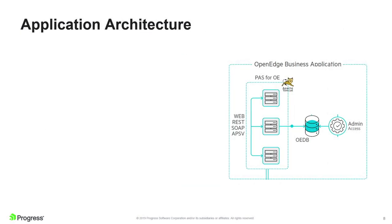First, the application architecture — essentially what was represented in the tiered traditional OpenEdge reference architecture. You have the database, the application server tier shown clustered here, and that serves up different interfaces for clients to consume. Perhaps the most relevant these days is REST, but we still need to support native ABL clients, SOAP clients, and other types of clients. The two key enabling technologies here are the Progress App Server for OpenEdge as the app server tier and the APIs — in particular REST. We're going to talk more about PASOE and the various REST API options you have.